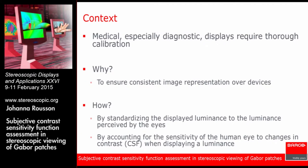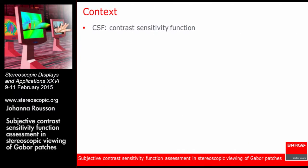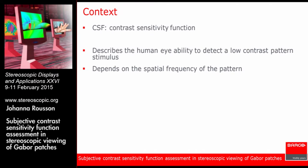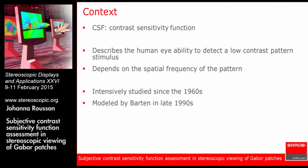This is handled by accounting for the sensitivity of the human eye to changes in contrast, denoted as the CSF when displaying luminance. The CSF stands for contrast sensitivity function — it's the human eye's ability to detect a low-contrast pattern stimulus, and it depends on the spatial frequency of that pattern. The contrast sensitivity function has been intensively studied since the 60s and was even modeled in the late 90s by Barton. However, the CSF has always been studied under 2D visualization conditions only.